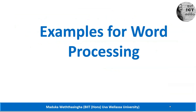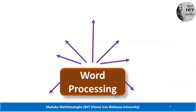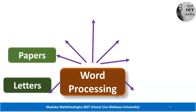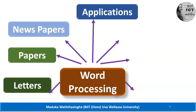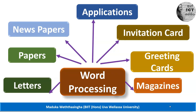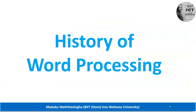Now we are going to learn about examples and uses of word processing software — why and for what purposes we use them. By using word processing software you can make documents, letters, papers, newspapers, applications, invitation cards, greeting cards, and magazines. These are some examples of word processing uses, and there are many more.